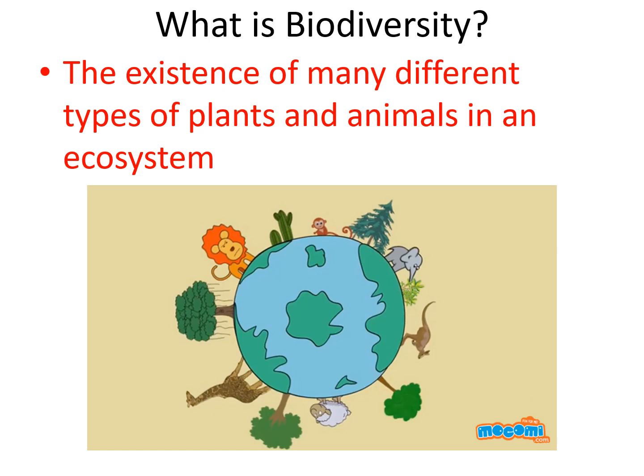Biodiversity is really important. 'Bio' means life and 'diverse' means different. In order for an ecosystem to be healthy, you want lots of different types of organisms — lots of producers, lots of primary consumers, secondary consumers, and so on. It's the existence of many different types of plants and animals in an ecosystem.